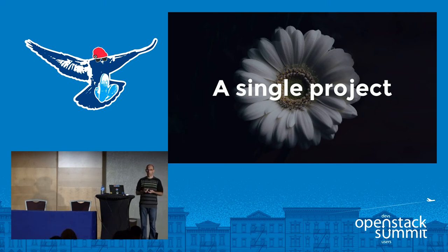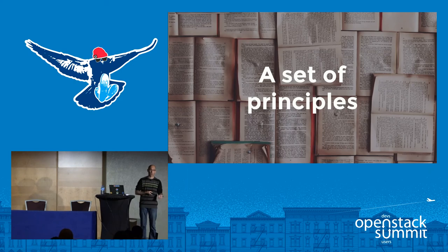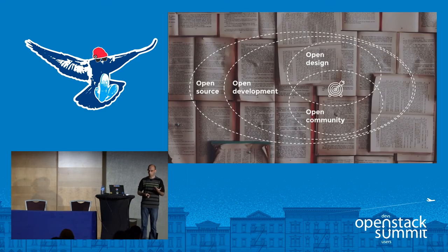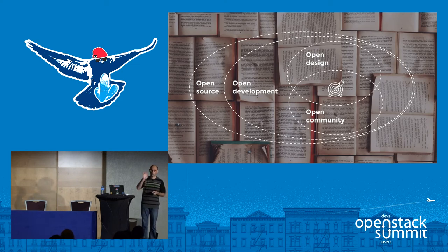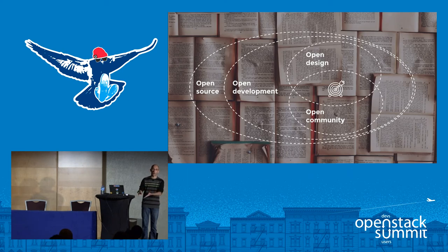We do that at the technical committee by trying to enforce a set of principles. So OpenStack is also a set of principles — Mark Collier touched on those this morning. They all derive from the four opens. Open source means we are licensed under an open source license. Open development means that everything happening in development is transparent: you can see every code change proposed, participate in reviewing them, propose code, see the list of features people work on, access logs of meetings, and participate in meetings. Everything is just happening in the open.